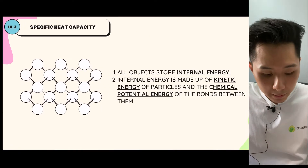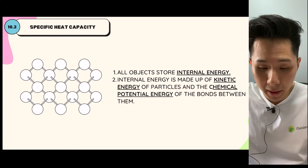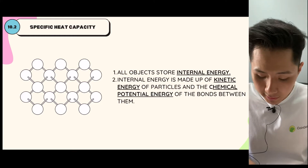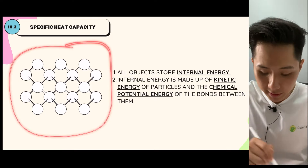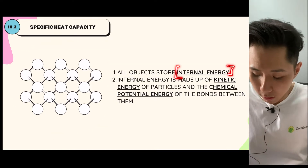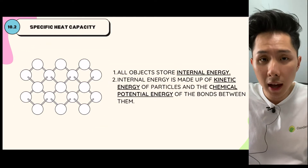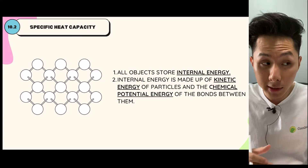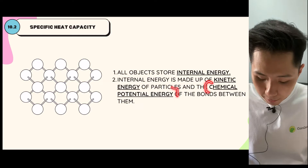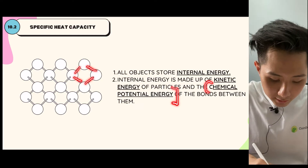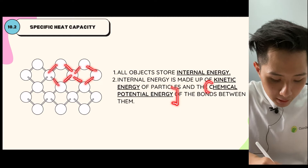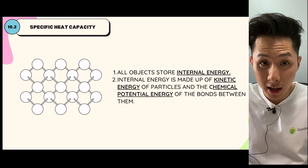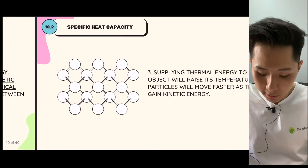Let's look into the second subtopic: specific heat capacity. Before understanding what this term means, you first need to understand that all objects — solid, liquid, and gas — they have something called internal energy. Internal energy basically consists of the kinetic energy of the particles and also the chemical potential energy, which is the chemical bond that makes the particles group together. These are the energies that a substance will store.